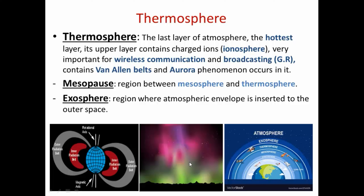The aurora phenomenon is a phenomenon that appears as brightly colored light curtains seen at both poles — the north and south poles of the Earth. The exosphere layer is the region where the atmospheric envelope merges into outer space, or it is the region between outer space and the atmospheric layers. That is all about our lesson today, and I hope to meet you in the next video. Thank you.